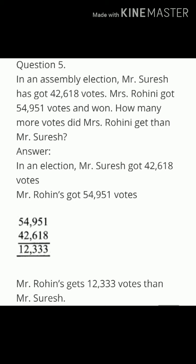Question number five: In an assembly election, Mr. Suresh has got 42,618 votes. Mrs. Rohini got 54,951 votes and won. How many more votes did Mrs. Rohini get than Mr. Suresh? Solution is: we have to find the difference between these two numbers. So, we get 12,333. Therefore, Mrs. Rohini got 12,333 votes more than Mr. Suresh. Thank you.